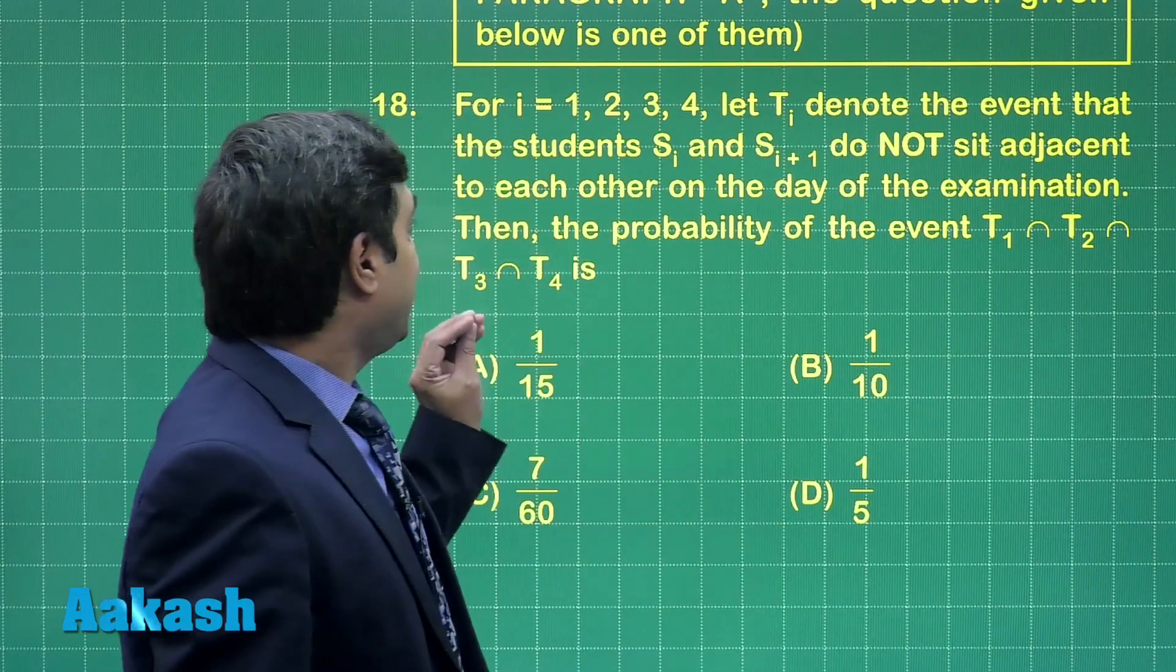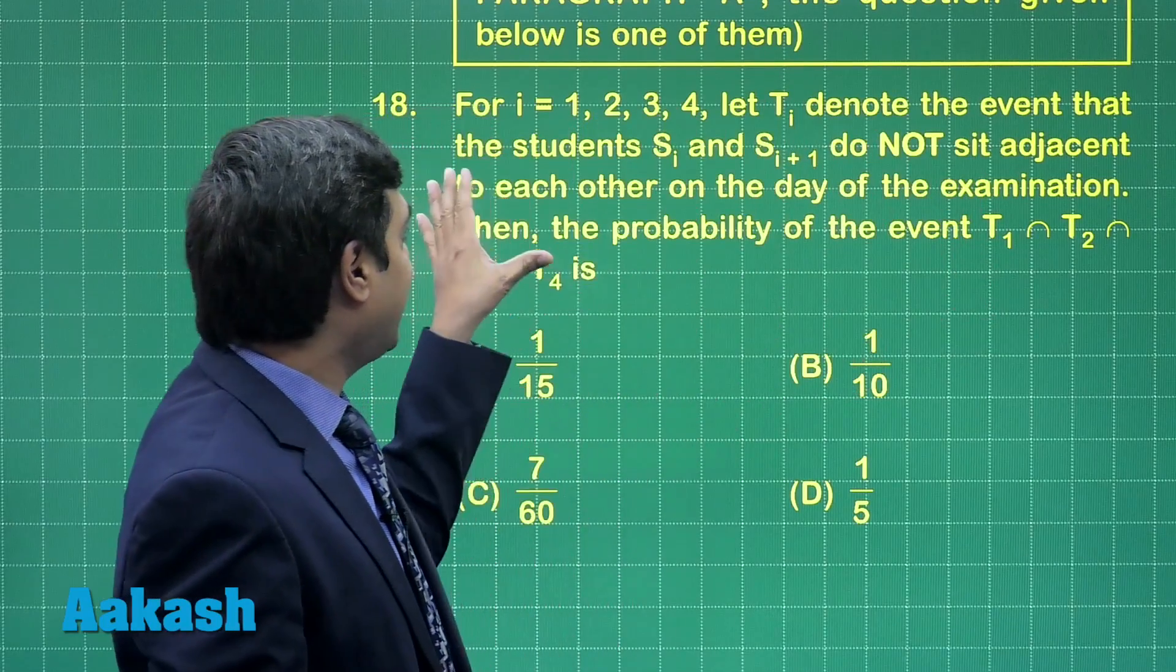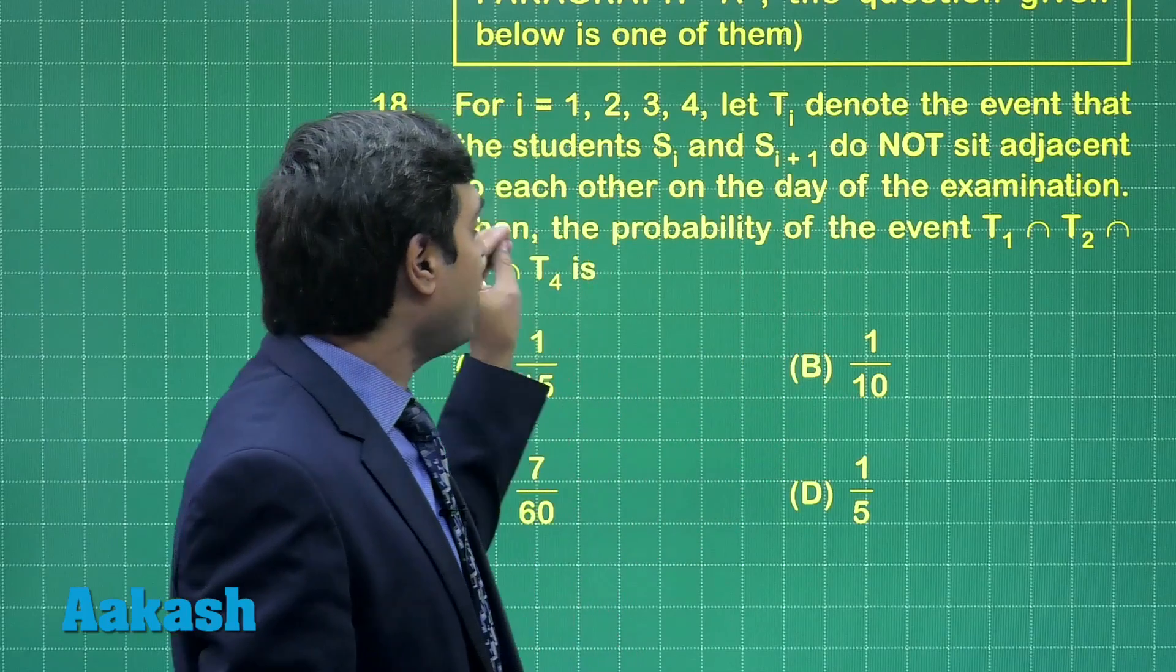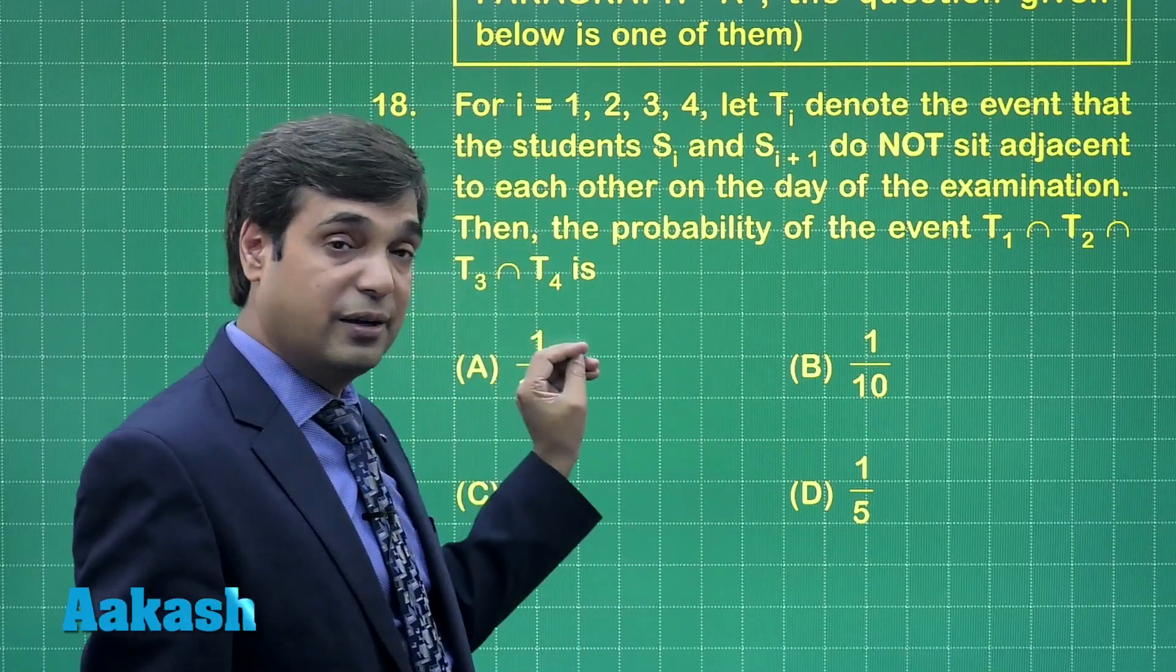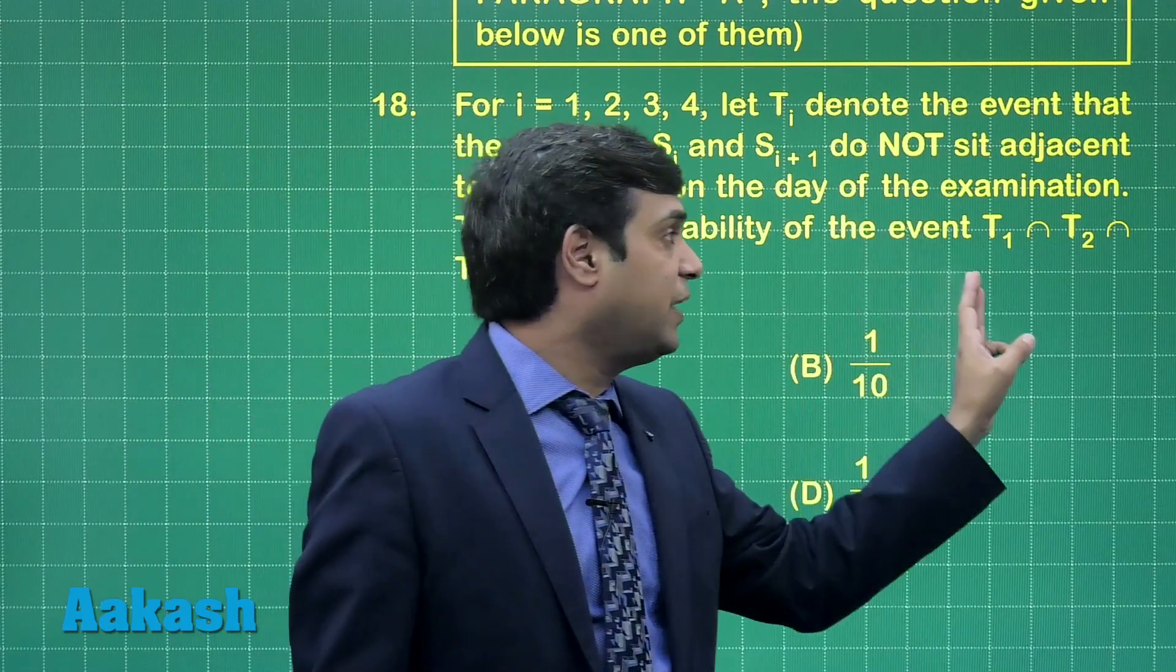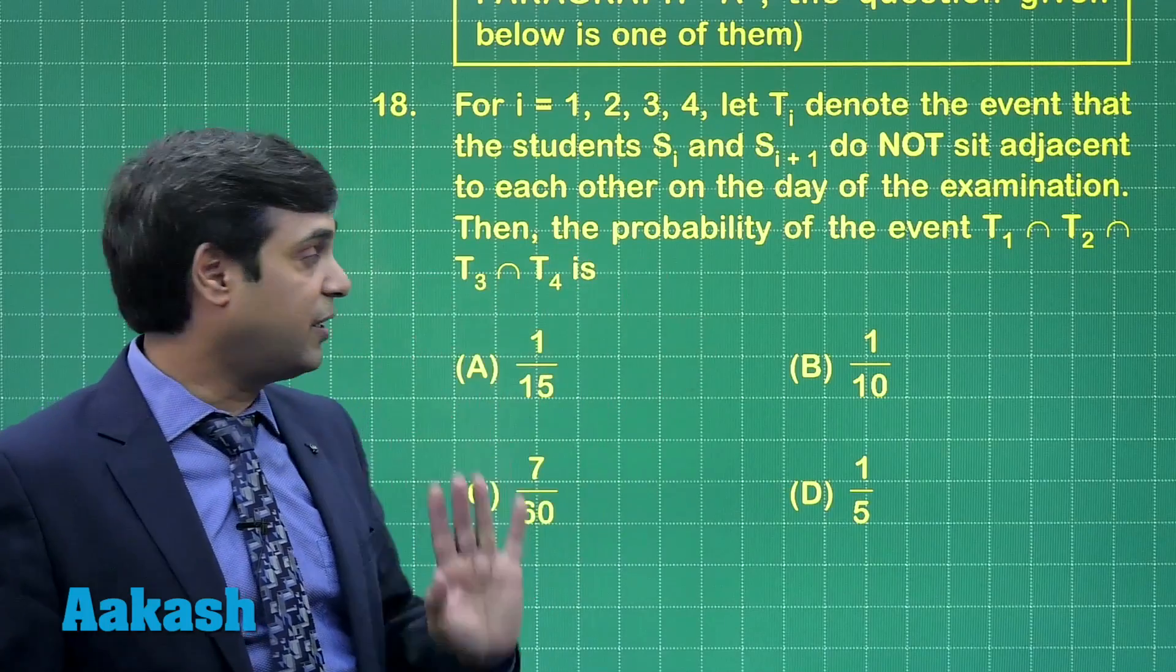This question number 18 says: for i equals 1, 2, 3, 4, let Ti denote the event that the students Si and Si+1 do not sit adjacent to each other on the day of examination. Then the probability of event T1 intersection T2 intersection T3 intersection T4 is.